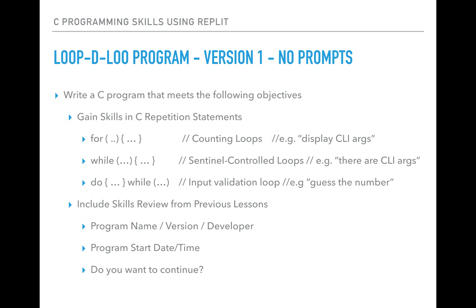The third one — probably the one you don't see quite as often, but still useful — is do-while. With this one, you will always do it at least one time. The condition is tested at the end; the do-while condition is at the end. This would be a good example for input validation — that is, you guess a number and you keep asking the user to guess a number until they get it right.